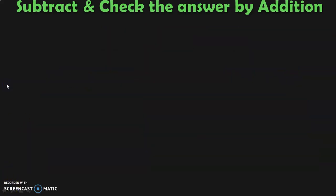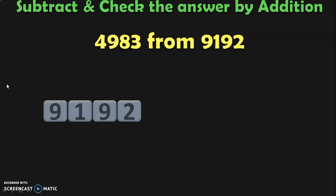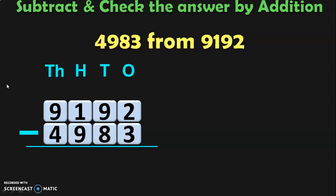Let us do another example. Subtract and check the answer by addition. 9192 is the number from which you are going to subtract. Write down its place values and write down the other number, then begin the subtraction from the 1s place. 2 minus 3 cannot be done, so you borrow from the 10s place. Regrouping the 10s place gives 8 tens and 10 ones. So 10 ones plus 2 ones gives 12 ones, and 12 minus 3 gives 9 in the 1s place.